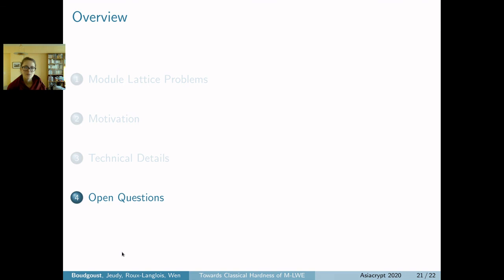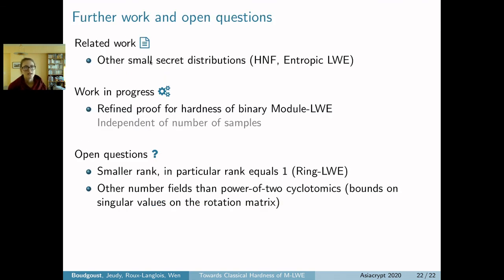I finish with some open questions. The first remark is there's a lot of work going on right now on secrets taken from small secret distributions, not necessarily binary but maybe bounded norm. Just refer to entropic LWE; there's work on entropic module-LWE and ring-LWE going on as well. There is some work in progress on our side where we try to refine the proof of hardness for binary module-LWE and make it independent of the number of samples.